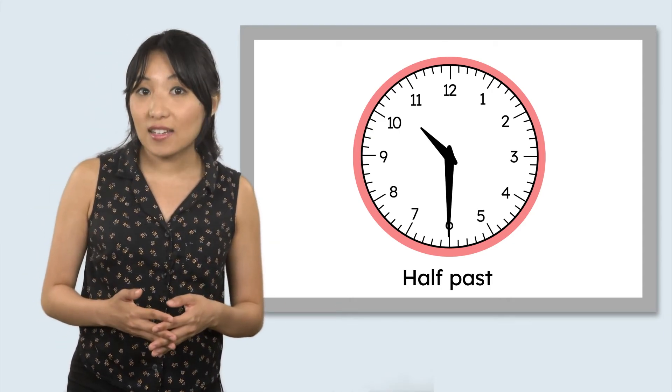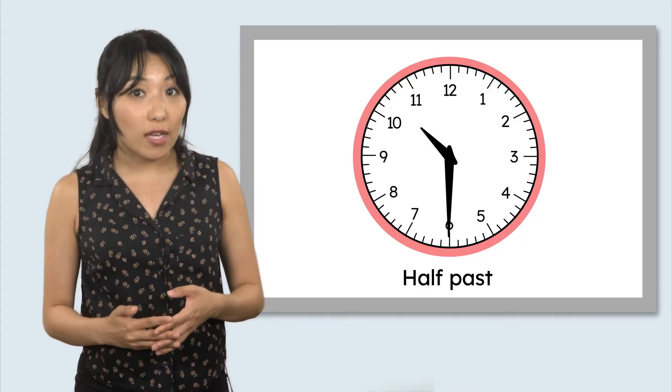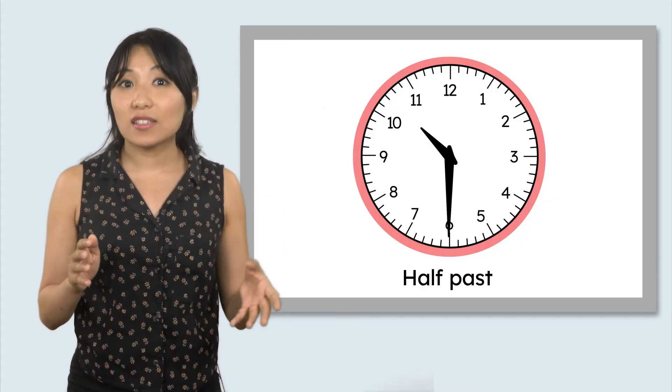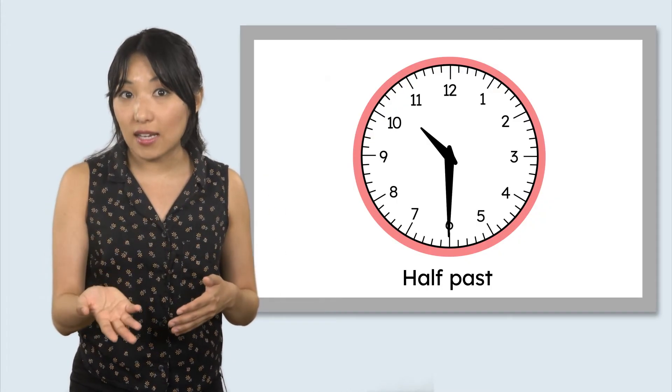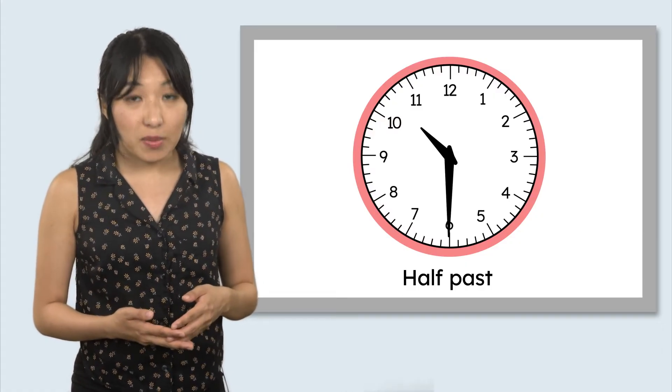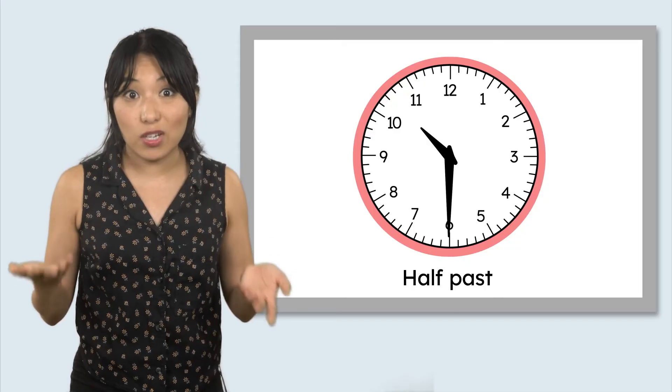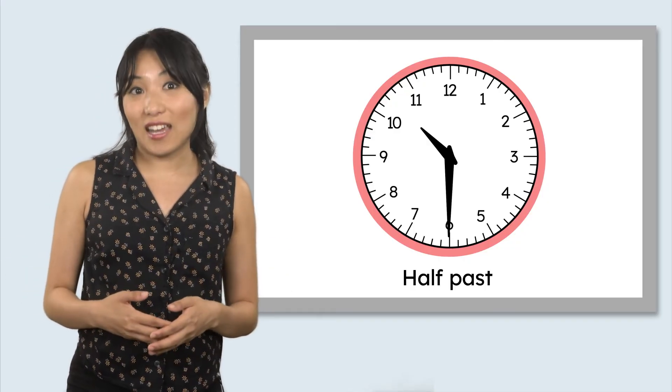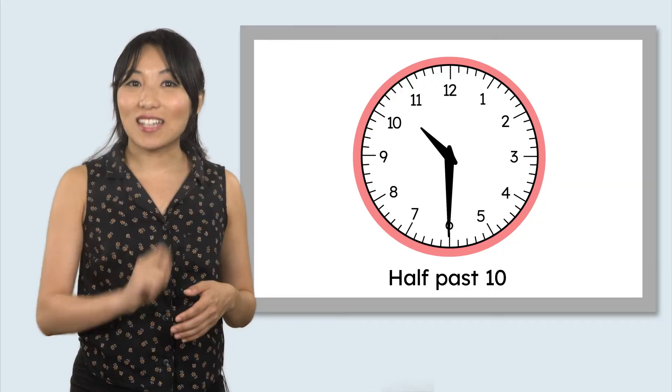If the time is half past 10, the hour hand will be halfway between the 10 and the 11, or halfway past the 10. It can't possibly be half past 11 yet, because the hour hand hasn't even reached the 11 yet. The hour is still 10, so it's half past 10.